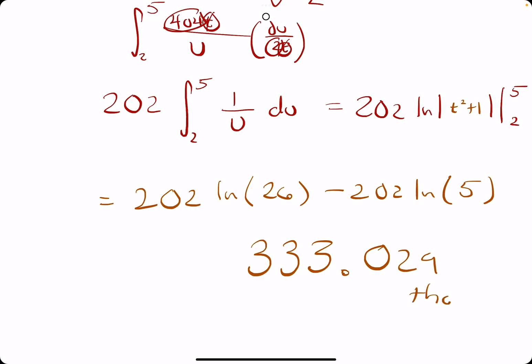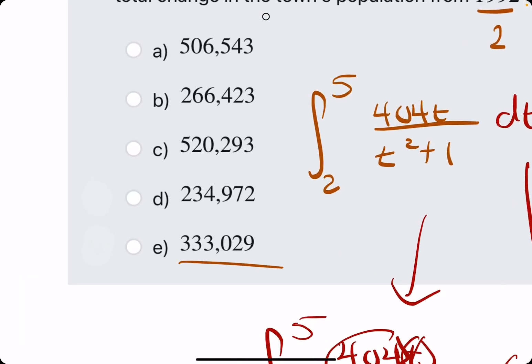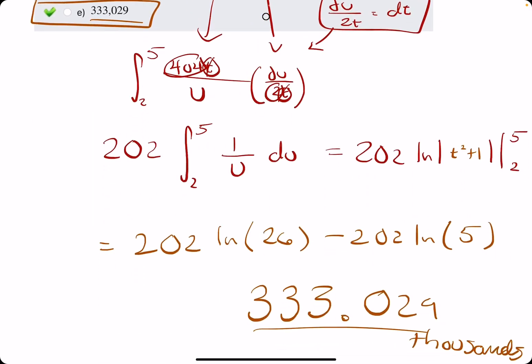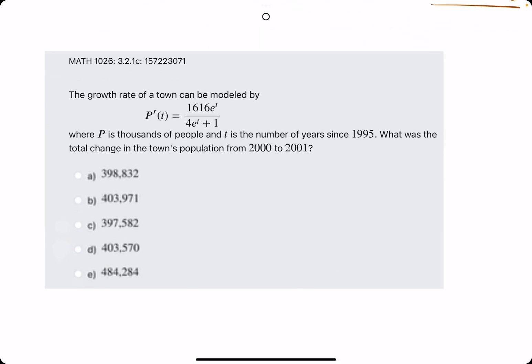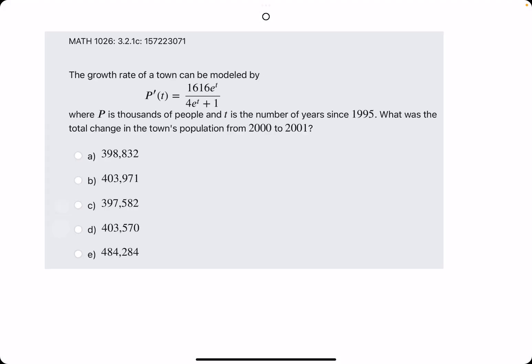And that's in thousands. So we're looking for 333,029. When we break out the eraser, we see it's option E. All right. Let's keep this super fun video going with this example.